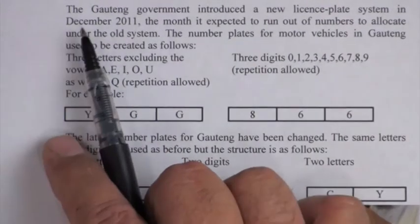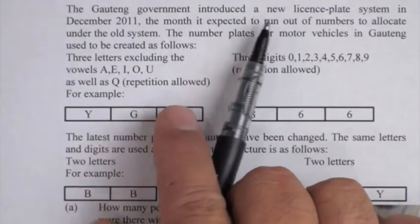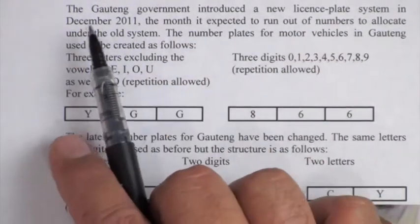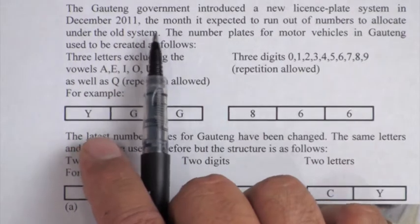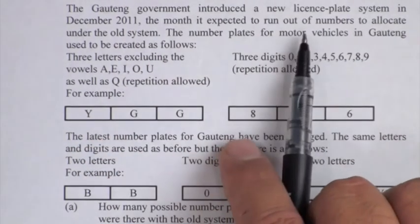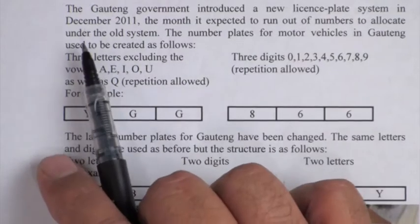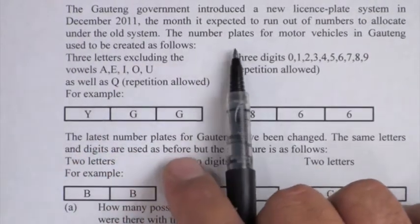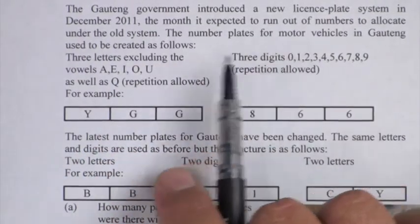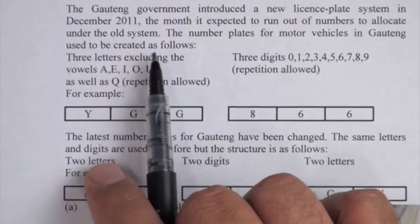Let's read this question. The Gauteng government introduced a new license plate system in December 2011, the month it expected to run out of numbers to allocate under the old system. The number plates for motor vehicles in Gauteng used to be created as follows.